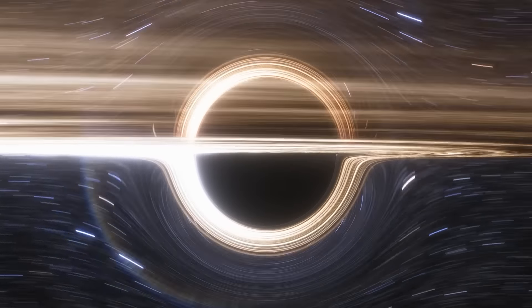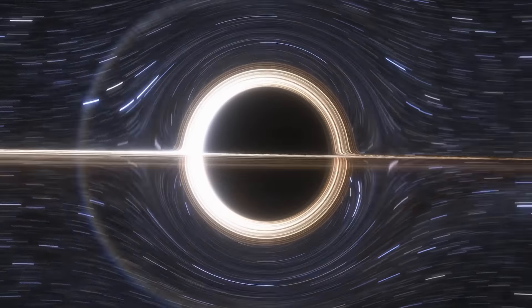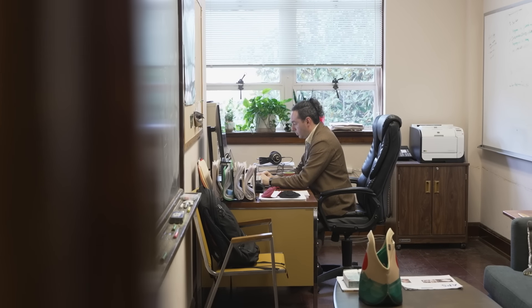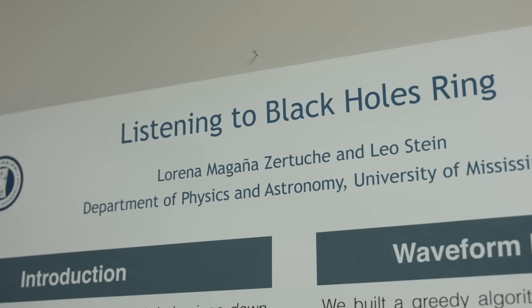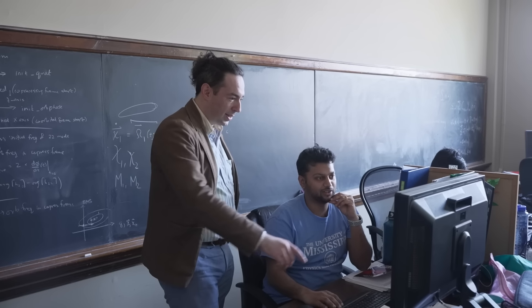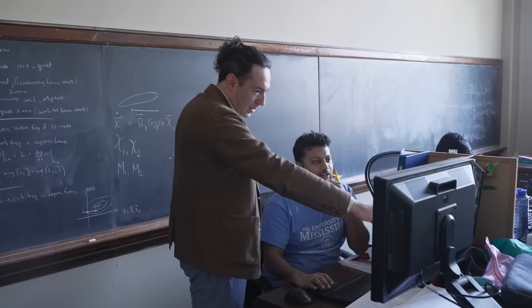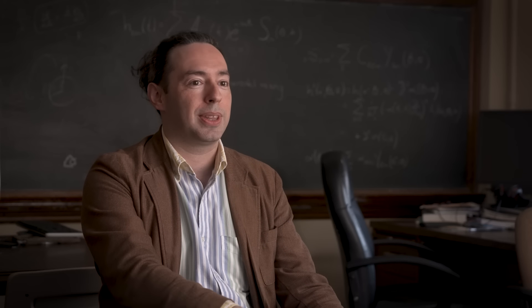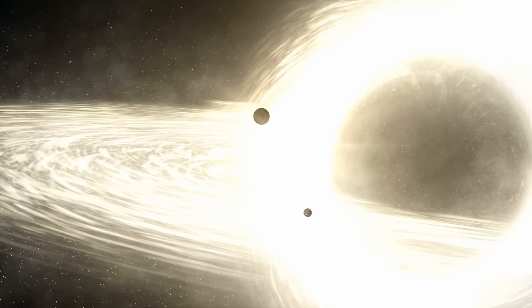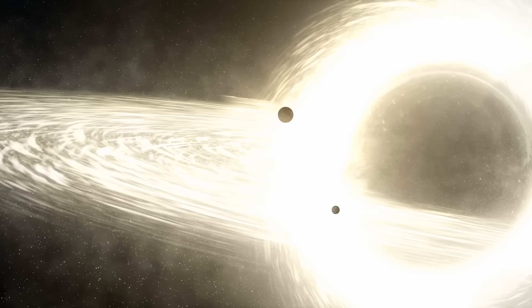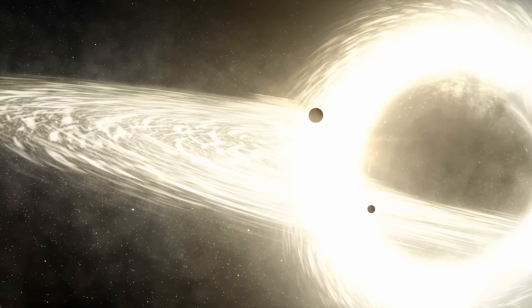Gravitational waves from merging black holes are the main signal that LIGO detects, but to know what to look for, LIGO needs predictions from theory. To make those predictions we use something called numerical relativity, because general relativity is too hard to solve with pencil and paper alone. We write large computer codes and run them on supercomputers to simulate black holes colliding, which gives us the templates we hand to our colleagues at LIGO so they can infer the masses, spins, and origins of the black holes they observe.